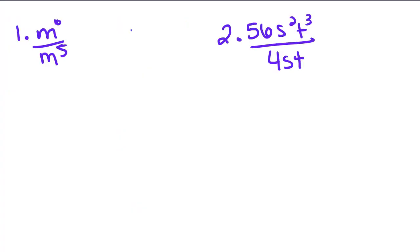So now let's do some examples. This is supposed to be to the 6th. So when we have the variables with different exponents, we're going to subtract the exponents, and we're going to get m to the 1st on top.